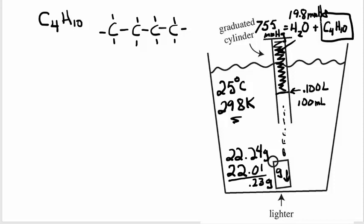So I'm going to take that and bring it over here and start the calculation. So the 755 millimeters of mercury in the room, minus the 19.8 millimeters of mercury that was the water vapor, which I'm subtracting off. The volume is 0.100 liters. According to our ideal gas equation, PV is equal to nRT.